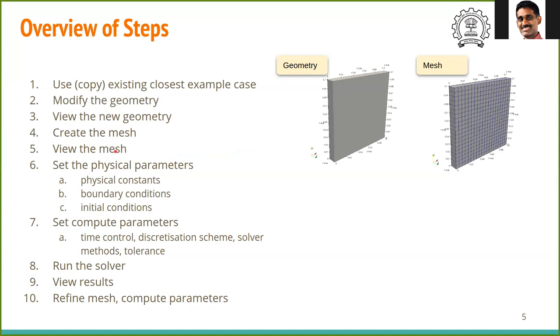Once the mesh is done, now you have to set the physical constants like thermal conductivity or viscosity, then boundary conditions and initial conditions in different folders. Always think about these steps when you're following the tutorials. First setting the physical parameters, then setting the computational parameters. Computational parameters essentially means till how much time you want to solve, when do you want to stop, how frequently you want data to be written to disk, what discretization scheme you must use, and what solver methods, tolerance and so on.